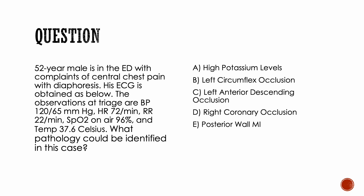A 52-year-old male is in the emergency department with complaints of central chest pain with diaphoresis. His ECG is obtained as below. The observations are blood pressure 120/65, heart rate 72, resting at 22, saturating 96%, and temperature of 37.6. What pathology could be identified in this case?